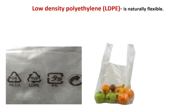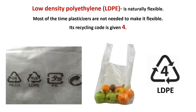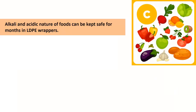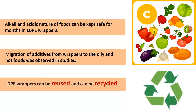Low-density polyethylene (LDPE) is naturally flexible; most of the time plasticizers are not needed to make it flexible. Its recycling code is 4. Foods of both alkaline and acidic nature can be kept safe for months in LDPE wrappers. Studies have observed migration of additives from wrappers to oily and hot foods. LDPE wrappers can be reused and recycled.